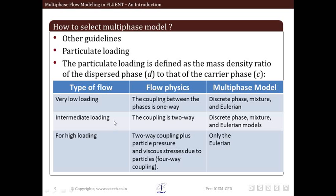If we have intermediate loading, in which the particulate loading number or ratio is average, the coupling is two-way. That is, the continuous phase is affecting the disperse phase, as well as due to the motion of the disperse phase, the flow of the continuous phase is also disturbed. Hence, it is two-way coupling. In such cases, we use the discrete phase model, the mixture model, and the Eulerian model.